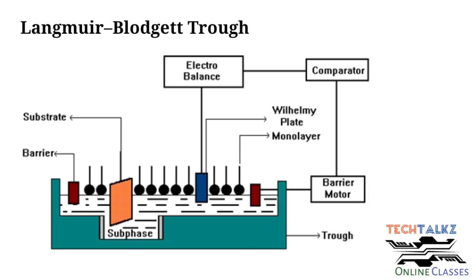For hydrophobic materials, we need to form a Langmuir layer on the water surface, then dip the substrate in the direction of coating. The coating direction depends on whether the substrate material is hydrophobic or hydrophilic.